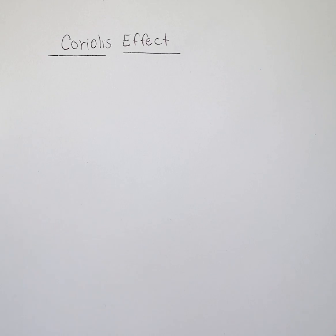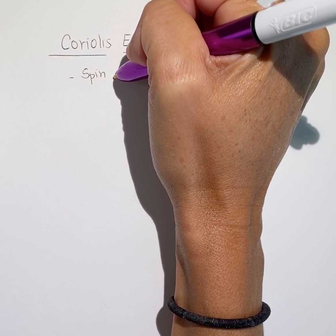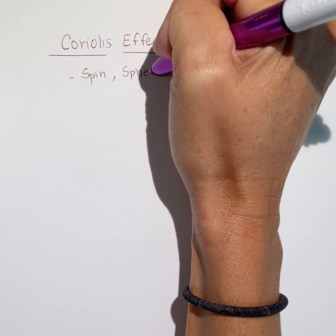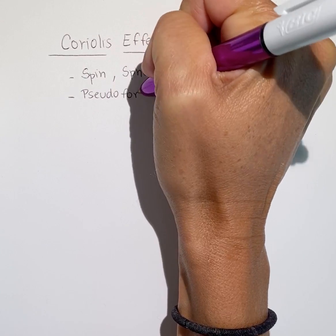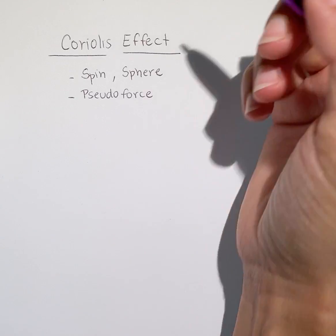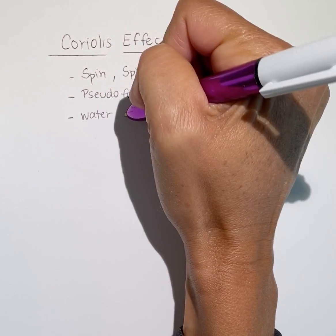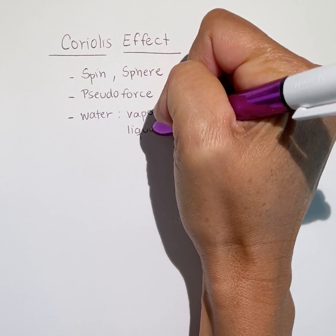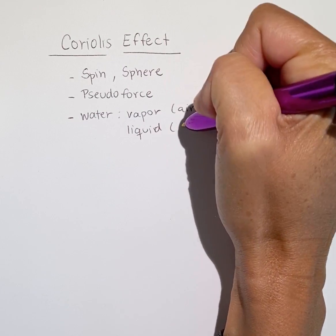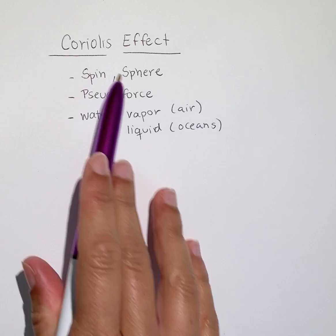The Coriolis effect is a result of the Earth's rotation or spin — its daily spin — and the fact that the Earth is a sphere. It is a pseudo-force, an apparent force, and it's felt by fluids such as air, water vapor, and liquid water. It's felt in the air and in the oceans. We need to understand this force because it explains atmospheric circulation as well as surface currents.